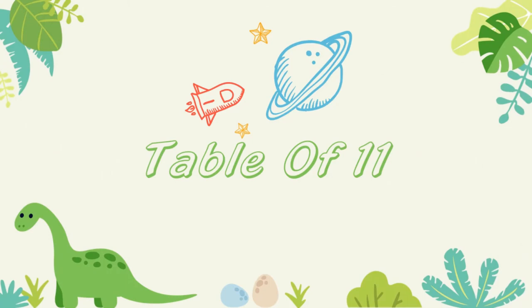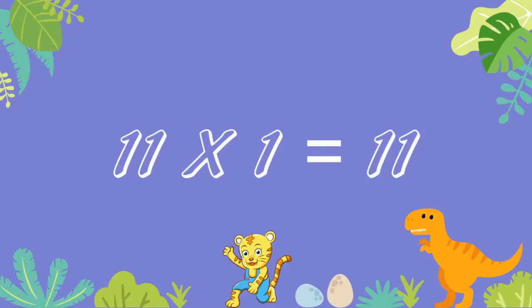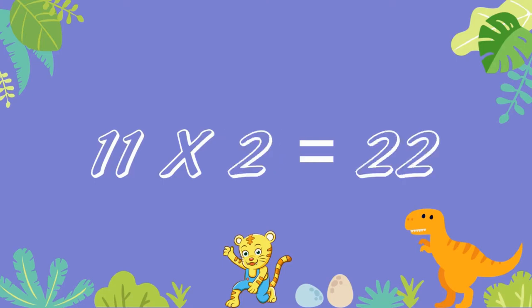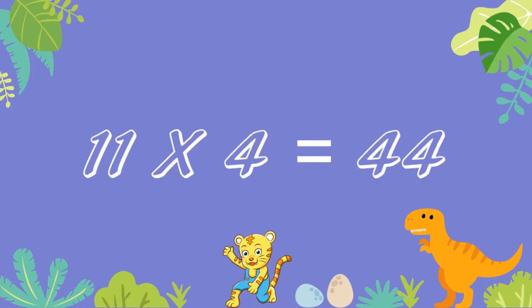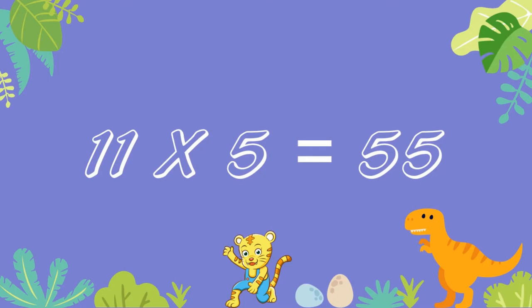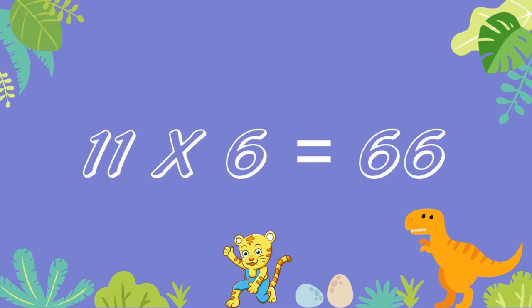Table of 11. 11 ones are 11. 11 twos are 22. 11 threes are 33. 11 fours are 44. 11 fives are 55. 11 sixes are 66.